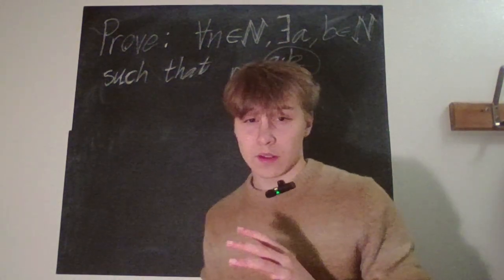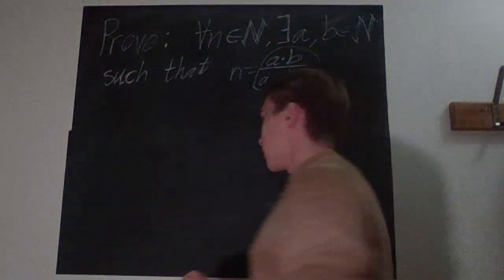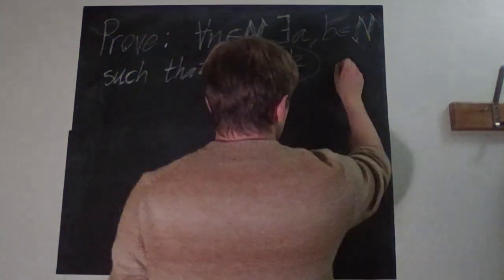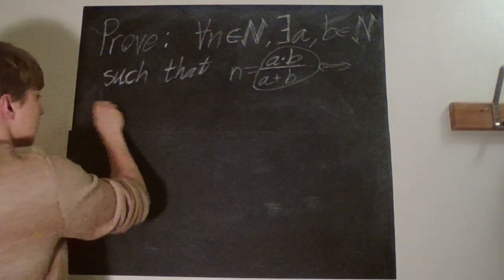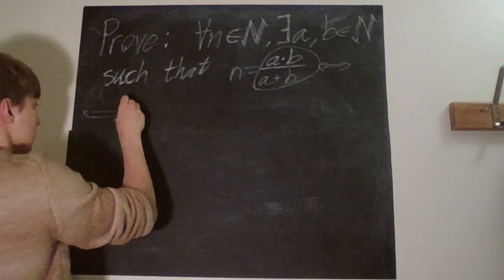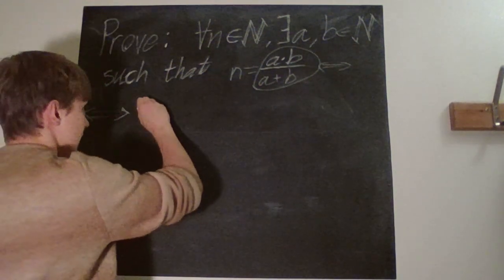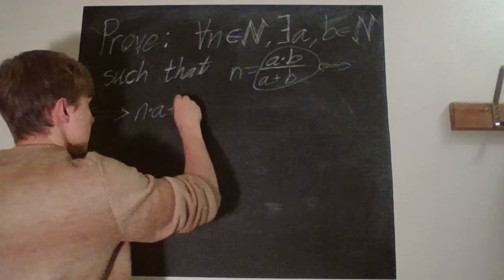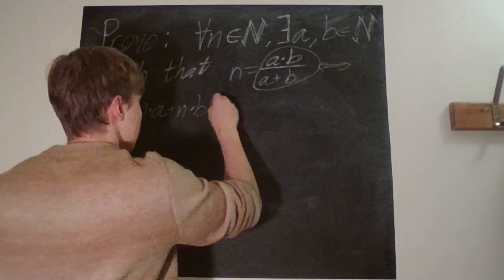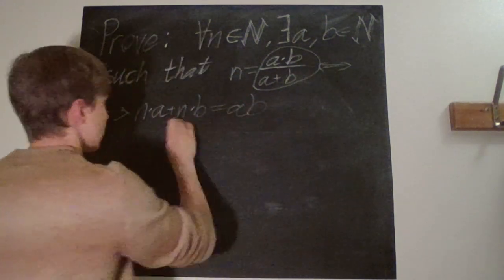Well, let's say we want to find some way to choose a and b of n such that it always works. Let's start with solving for, say, a. This thing is equivalent to...